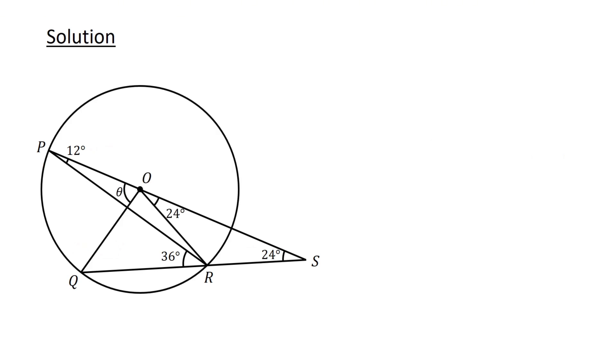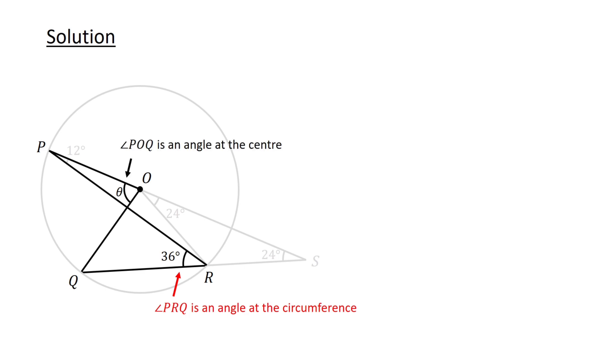Finally, let's focus on the part of the diagram consisting of the line segments OP, OQ, PR, and QR. Angle PRQ is an angle at the circumference and angle POQ is an angle at the center, subtending the same arc.